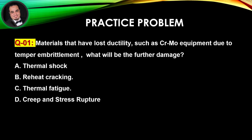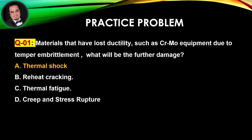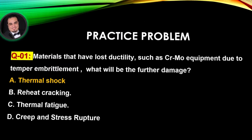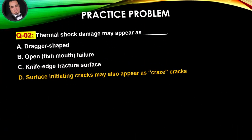Practice time. Question number one: materials that have lost ductility, such as chromium molybdenum equipment due to temper embrittlement, what will be the further damage? Answer is A: thermal shock damage. Question number two: thermal shock damage may appear as? Answer is D.